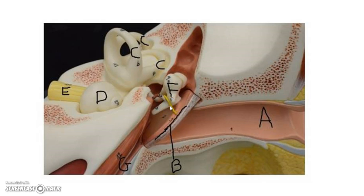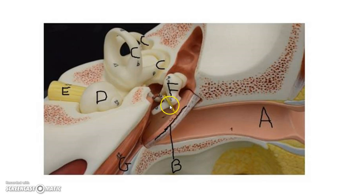Those movements are then passed on to the auditory ossicles — the malleus, the incus, and the stapes. What they're going to do is help focus the mechanical movements to the oval window. Notice the tympanic membrane is really wide, and it gets smaller and smaller, focusing those sound waves onto the oval window. The ossicles focus those mechanical movements to the oval window and also help amplify that sound wave.